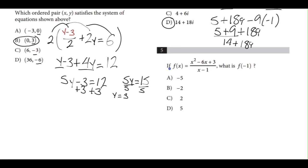Number 5, if f(x) equals (x² - 6x + 1)/(x - 1), what is f(-1)? In the original equation, we have f(x), and the question is asking for f(-1). We're replacing x with negative 1, and we're going to do the same in the equation. Instead of x, we're going to write negative 1. So we'll have (-1)² - 6(-1) + 3 over (-1) - 1.